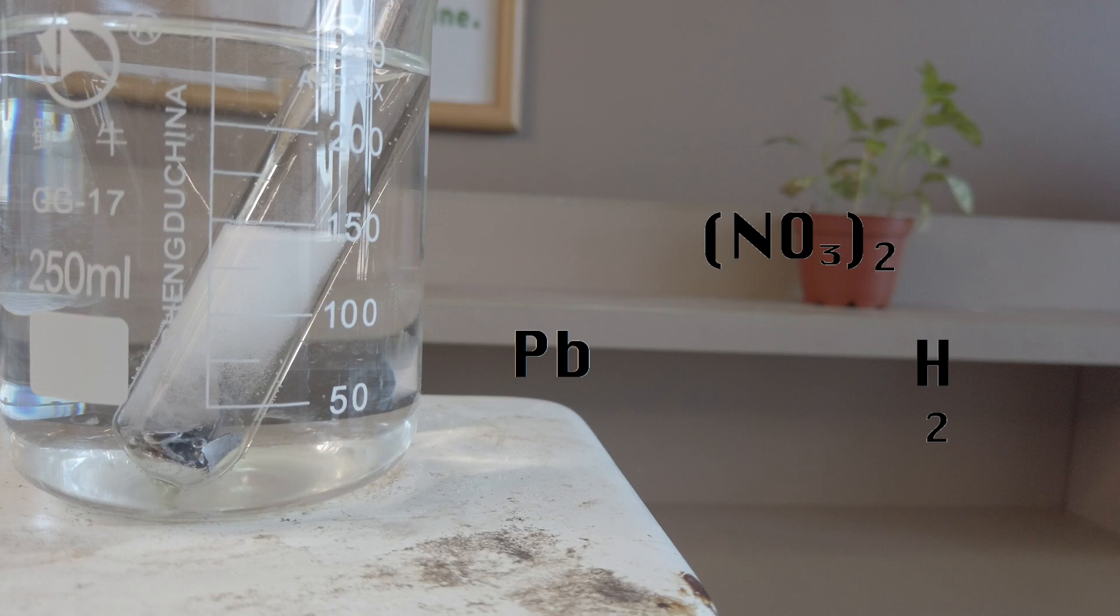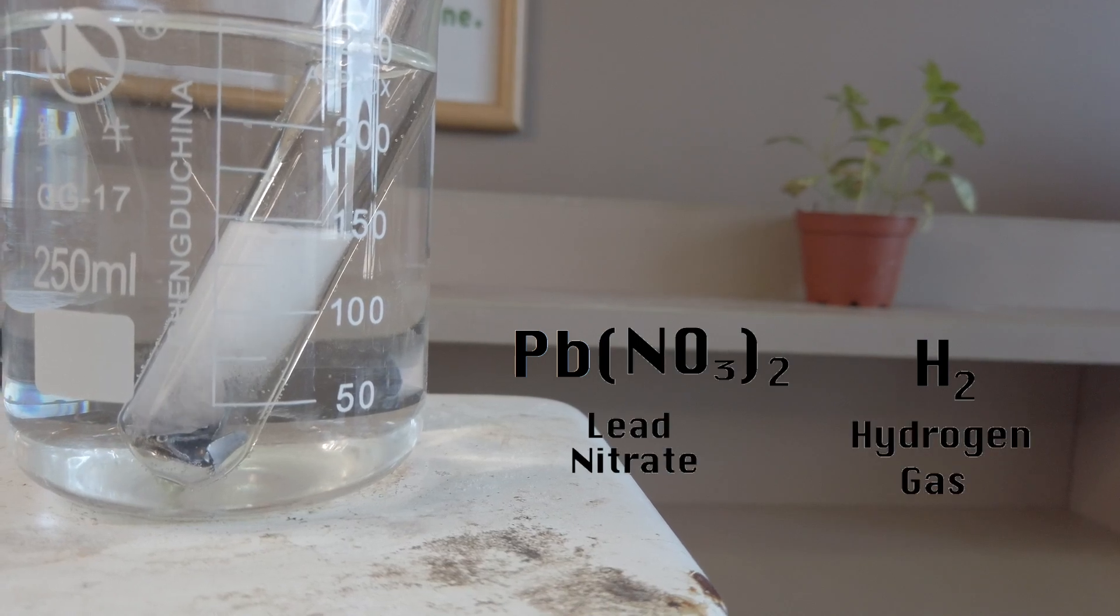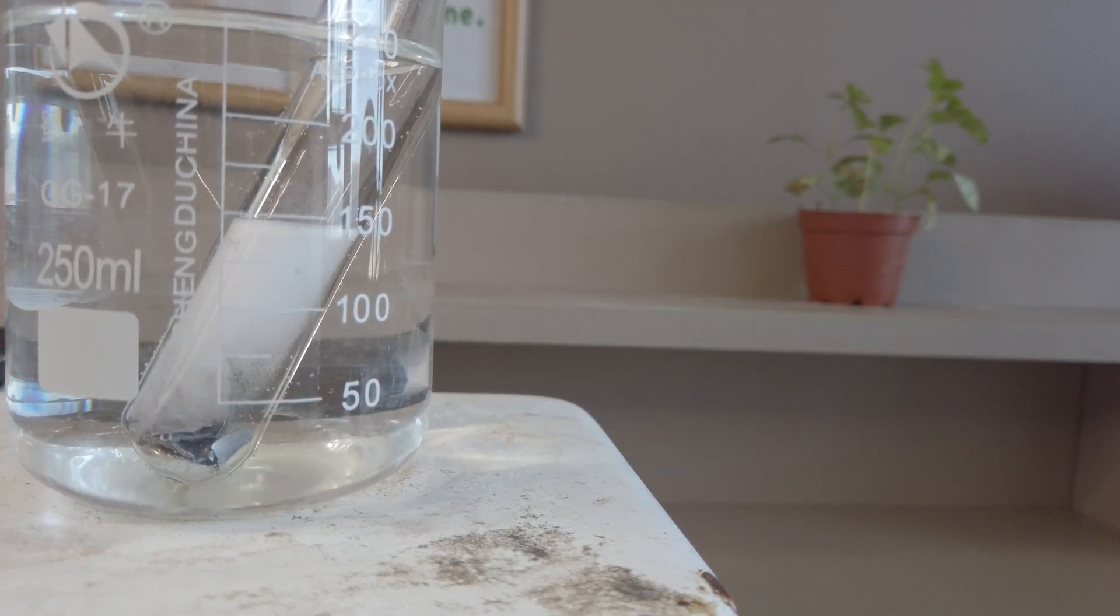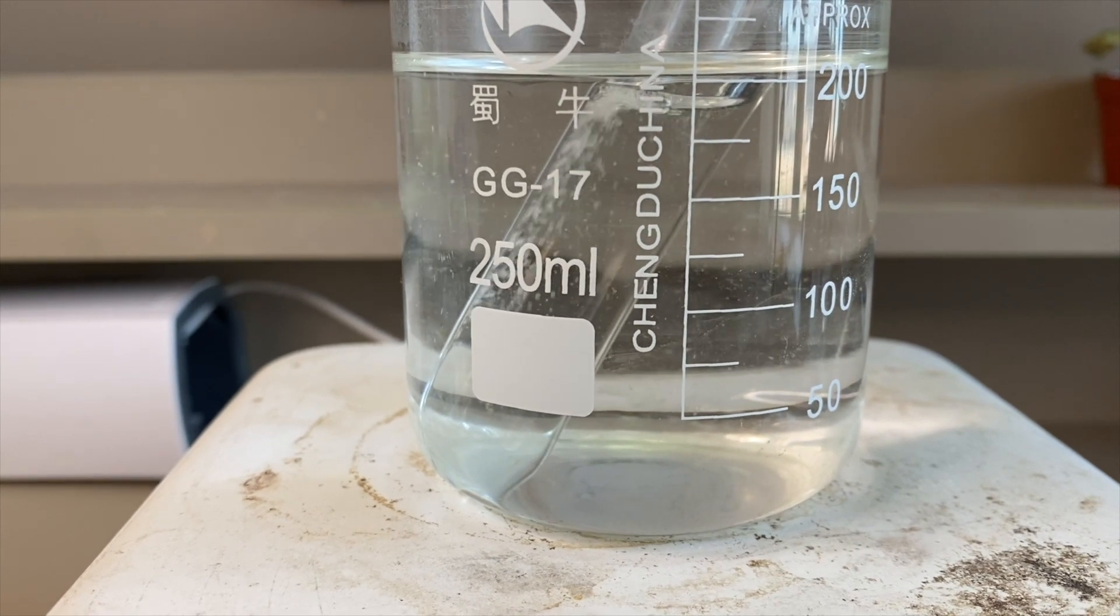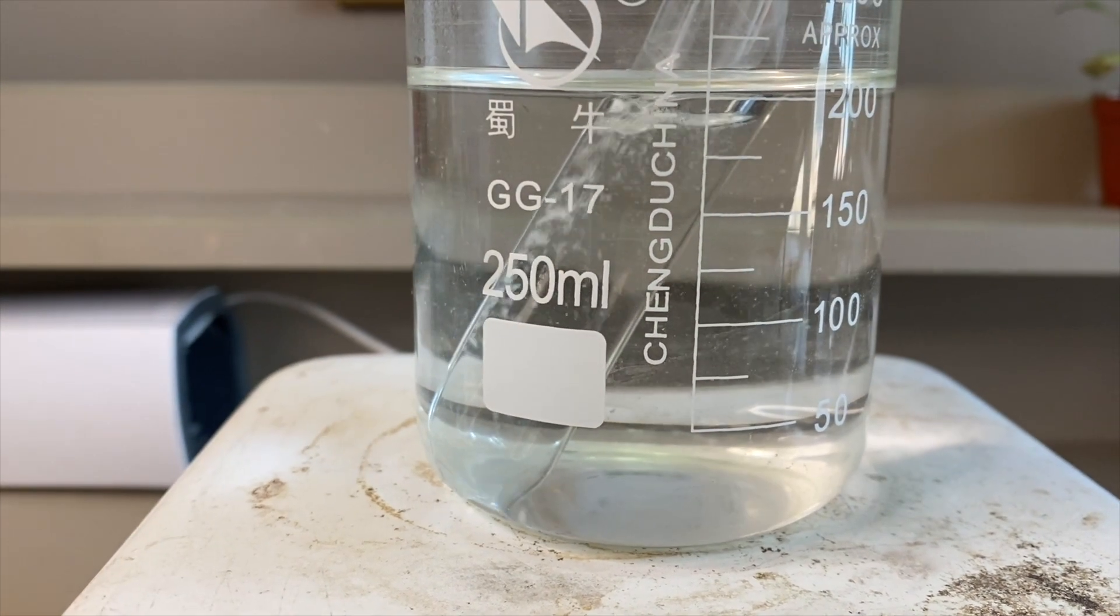The lead solid here reacts with the nitric acid to form lead nitrate, which is soluble and colorless. When the sheets are dissolved completely, more of it is added to the solution until the acid stops reacting.